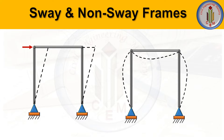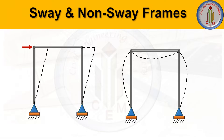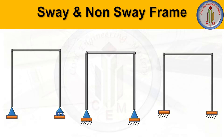Welcome back to Civil Engineering Master. When we analyze a structure, we need to consider gravity loads as well as lateral loads. When analyzing a structure with lateral loads, we need to consider the terms sway and non-sway frames. Sway frames are also called unbraced frames, and non-sway frames are called braced frames.